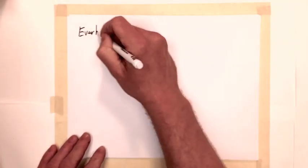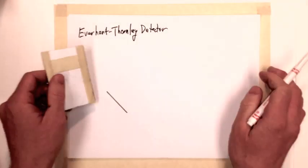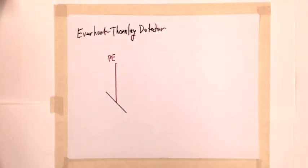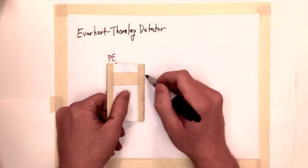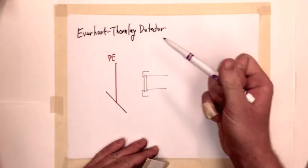Although the Everhart Thornley design is primarily used to detect secondary electrons due to their low energy, it will also detect any backscattered electrons propagating through the same solid angle. The Everhart Thornley detector uses a positive potential operating at approximately 300 volts to attract secondary electrons towards the detector.